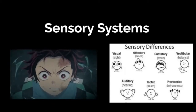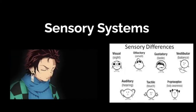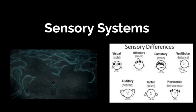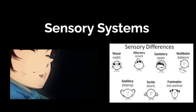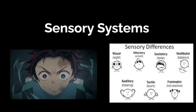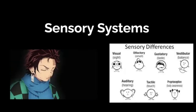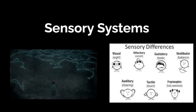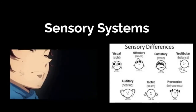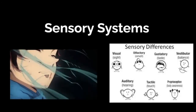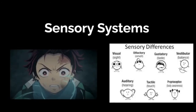How many senses do we have? Actually, we have so many senses. These include visual or sight, olfactory or smell, gustatory or taste, vestibular or balance, auditory or hearing, tactile or touch, and proprioception or body awareness.